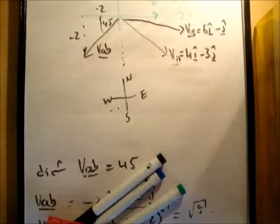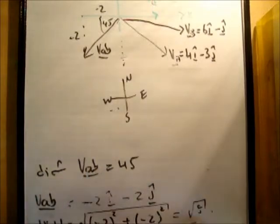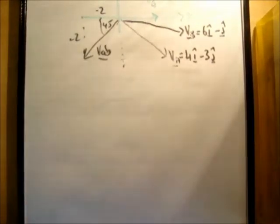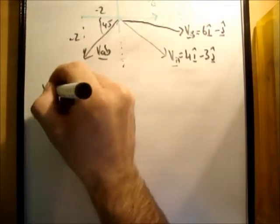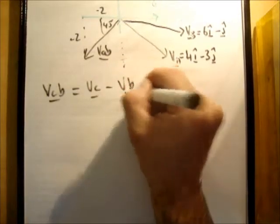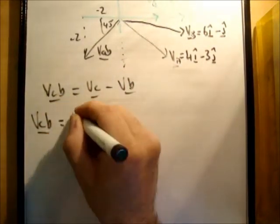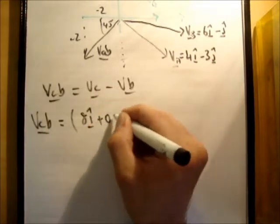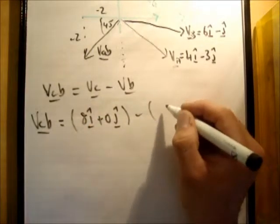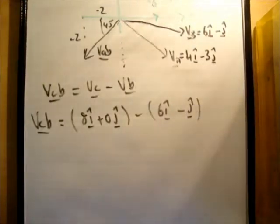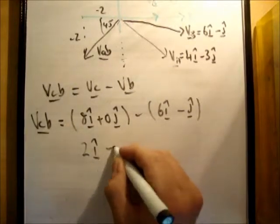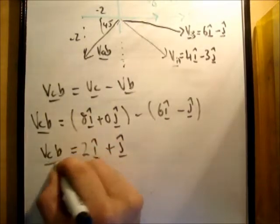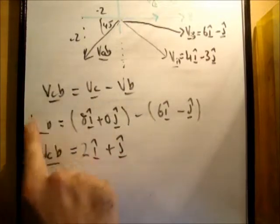And I'll just do the next vector, but I will do it quicker, because we've done the theory already. So let's just do that. So we get the vector C with respect to B. So vector CB is equal to VC minus VB. VCB is equal to 8I hat plus 0J hat minus 6I hat minus J hat, like so. So we're going to get 2I hat plus J hat, like so. That's VCB. So I'm just getting rid of this. We don't need this anymore.